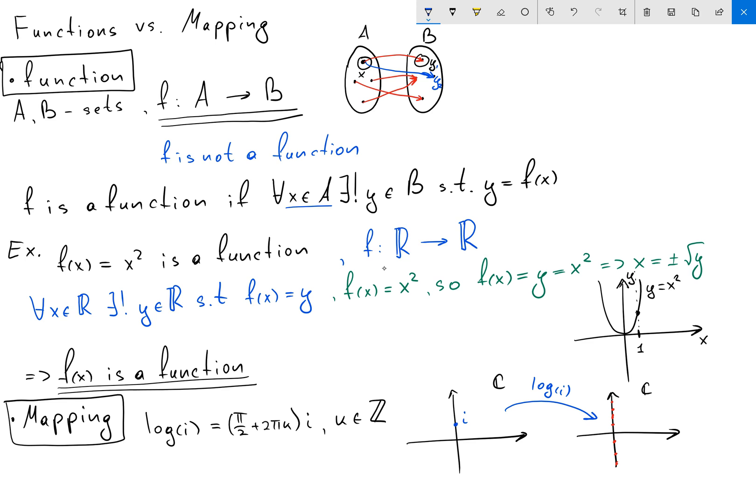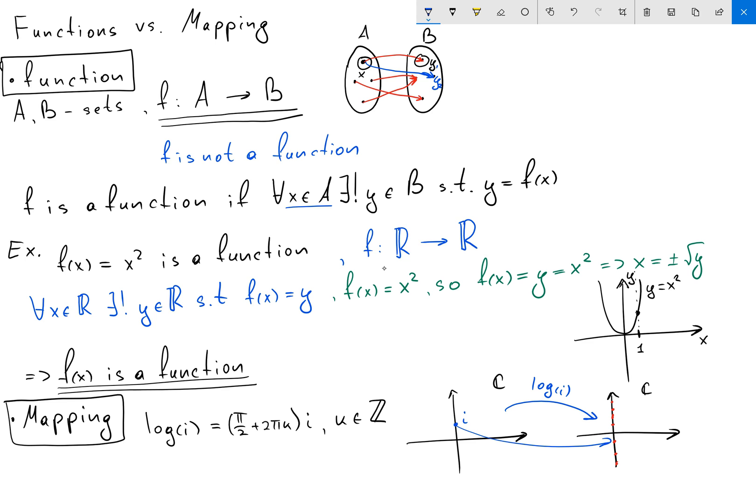So you can see actually our element i is mapping to infinitely many elements in the complex plane.